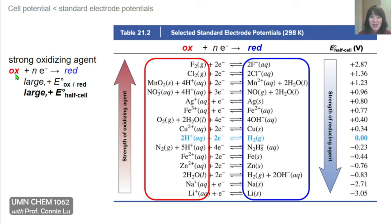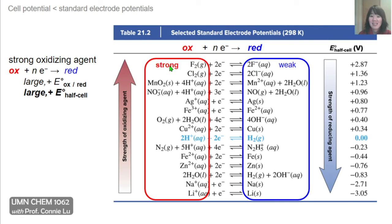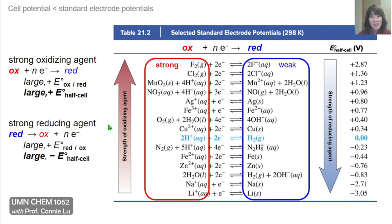For an oxidizing agent to be strong, the reaction where the oxidized species picks up electrons to form its reduced partner must be strongly favored, requiring a large positive E°. Because this is the conventional tabulated form, we simply need a large positive half cell potential value. The largest positive value in the table is +2.87 volts for F₂ (fluorine gas), making fluorine gas an extremely strong oxidizing agent. Its reduced partner, F⁻, is correspondingly a very weak reductant.